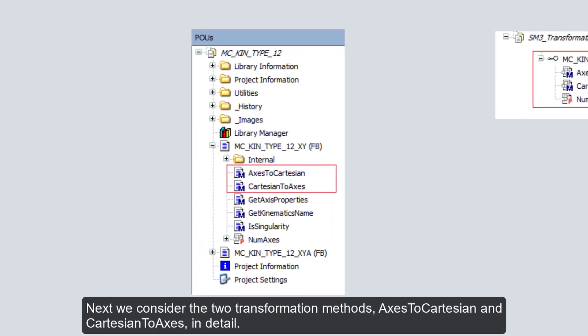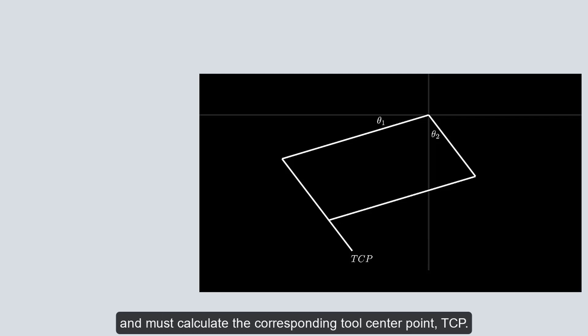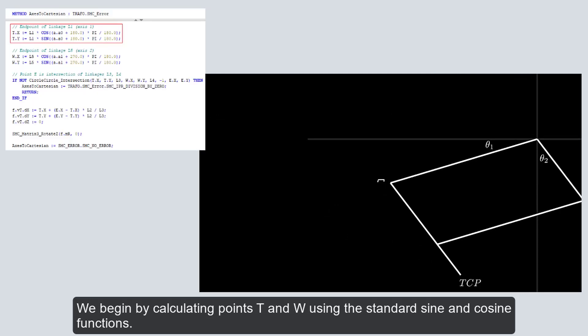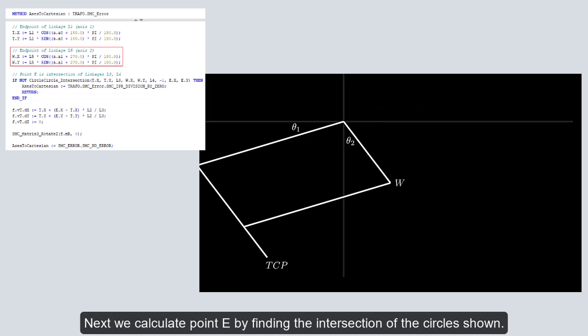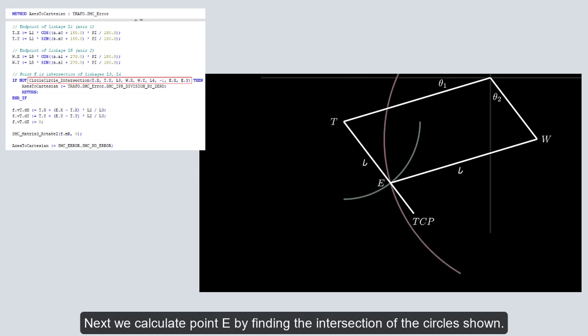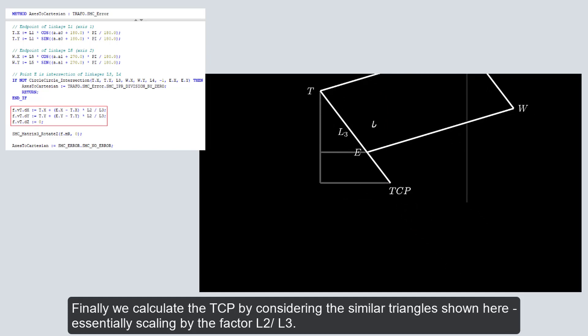Next, we consider the two transformation methods in detail. AxesToCartesian defines the forward kinematic. We are given the joint angles, shown here as theta1 and theta2, and we must calculate the corresponding tool center point. We begin by calculating points T and W using the standard sine and cosine functions. Next, we calculate point E by finding the intersection of the circle shown. Finally, we calculate the tool center point by considering the similar triangle shown here, essentially scaling by the factor L2 over L3.